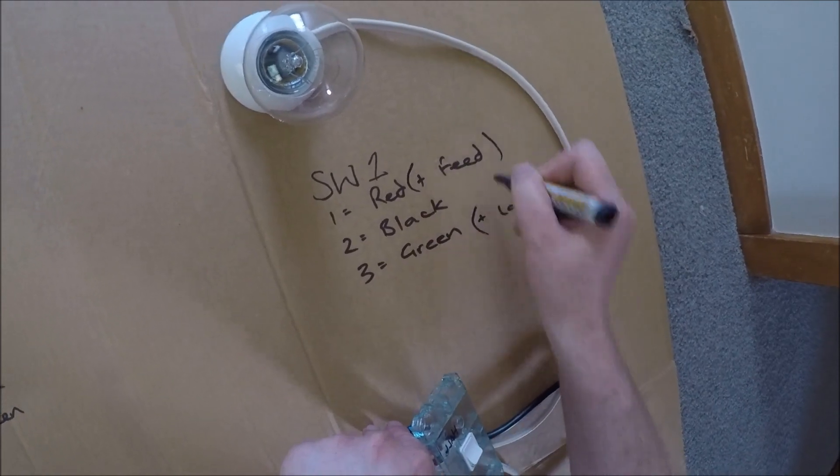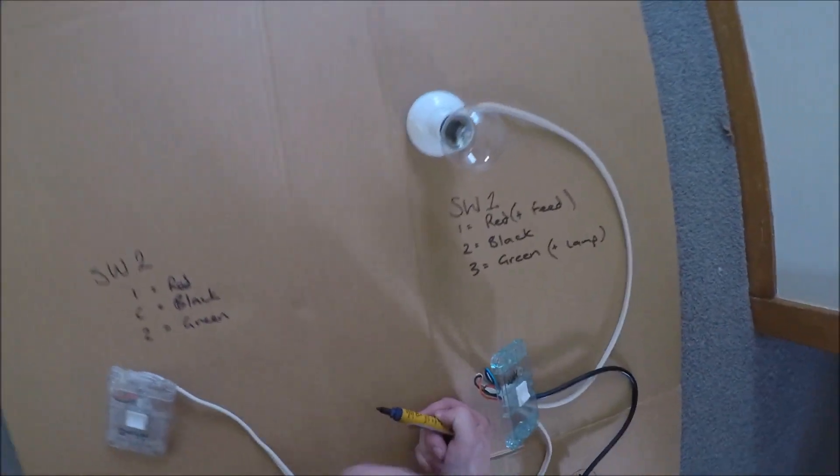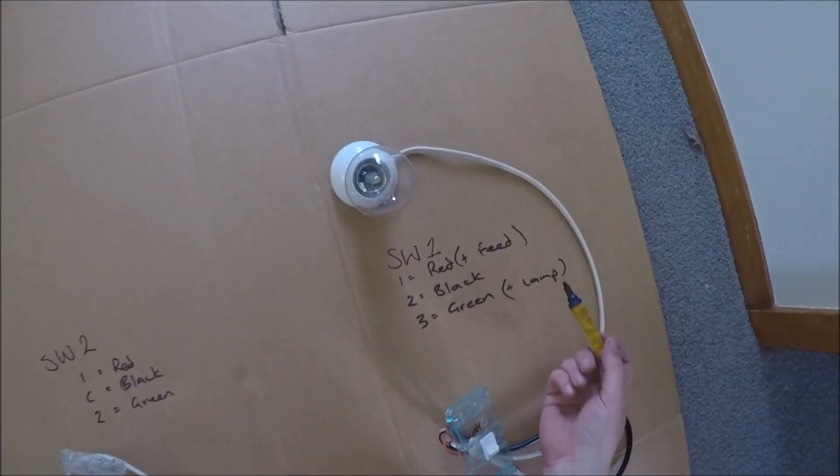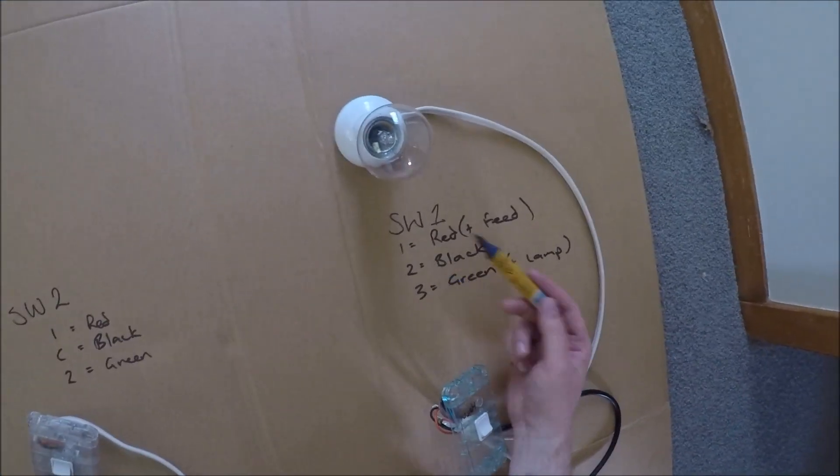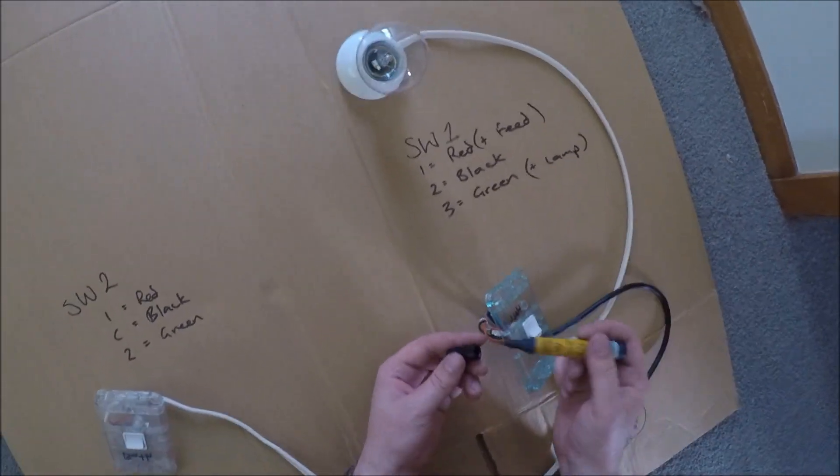So if we put brackets around the feed and the lamp - red, black, green - it's the same. You just want to put the feed and the lamp into number one or three, any way around you want. You could have the lamp in one or the feed in three.